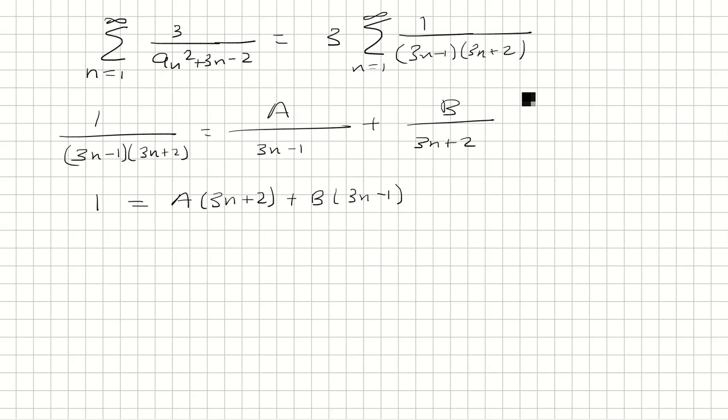At this point, we want to solve for A and B. So when is 3n plus 2 equal to 0? That's when n is equal to negative 2 thirds. So we have 1 equals 3 times negative 2 thirds is negative 2, minus 1 is negative 3. That means B is negative 1 third.